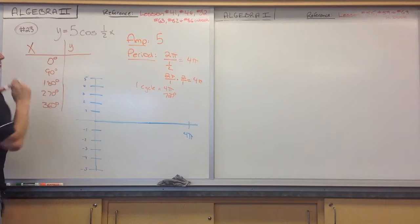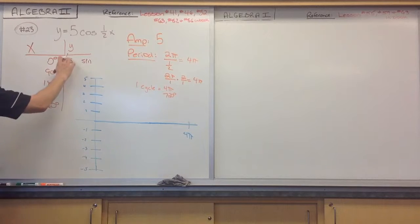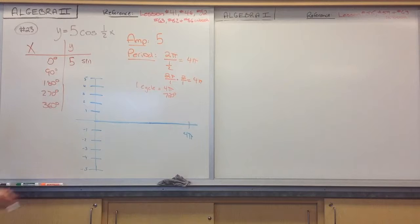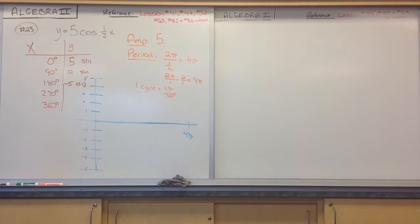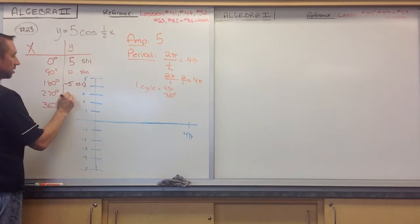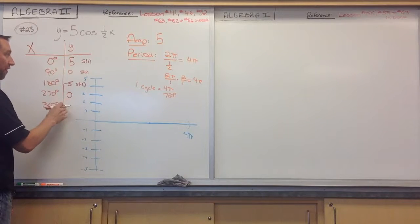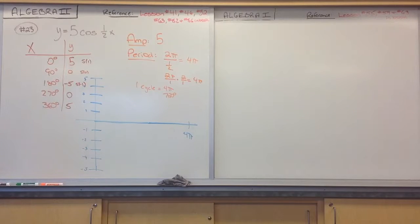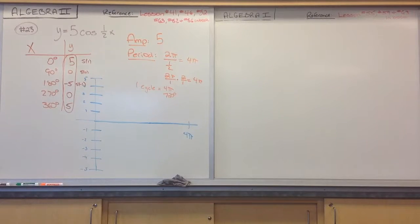Cosine of 0 is 1, times 5 gives 5 — so amplitude is 5. Cosine of 90 degrees is 0, so 5 times 0 is 0. Cosine of 180 is negative 1, so 5 times negative 1 is negative 5. Cosine of 270 is 0, so 5 times 0 is 0. Cosine of 360 is 1, so 5 times 1 is 5. These are my amplitude changes as I go through the cosine function.